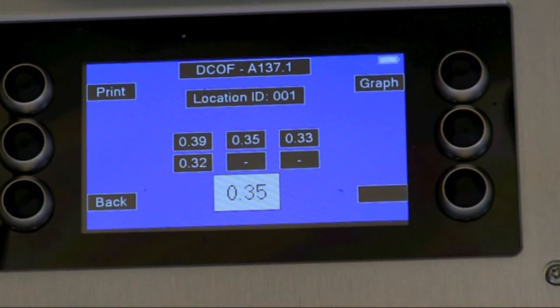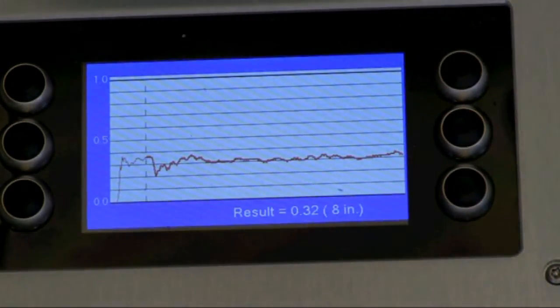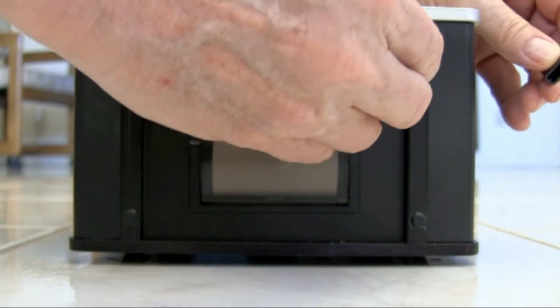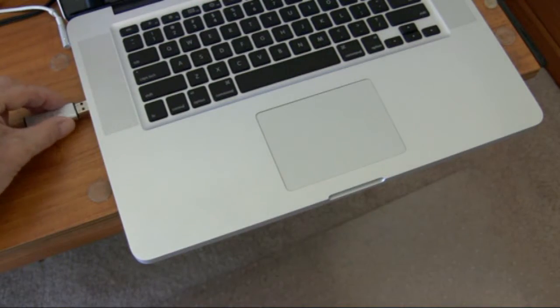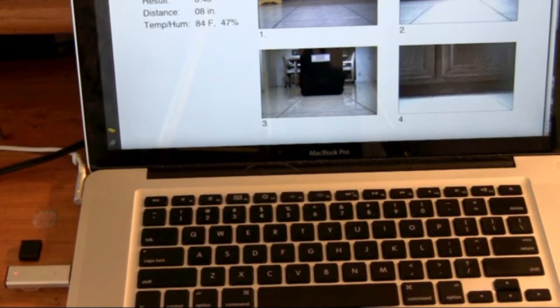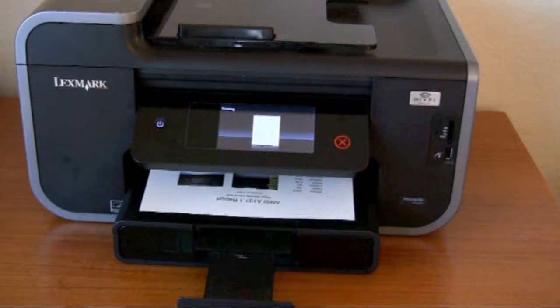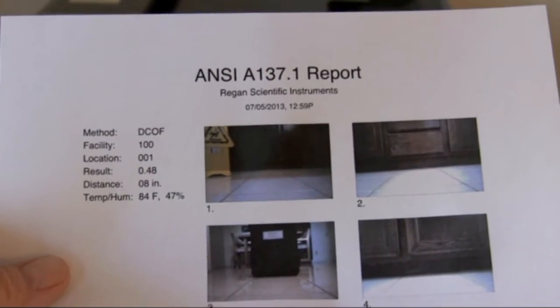When we've completed all four runs, we have completed the official test method. We can have a look at the graphs, print the data, or we can insert a standard USB flash drive, follow the on-screen directions to download the data and photos taken by the BOT during the testing, and then upload a complete report to any computer for storage and printing.